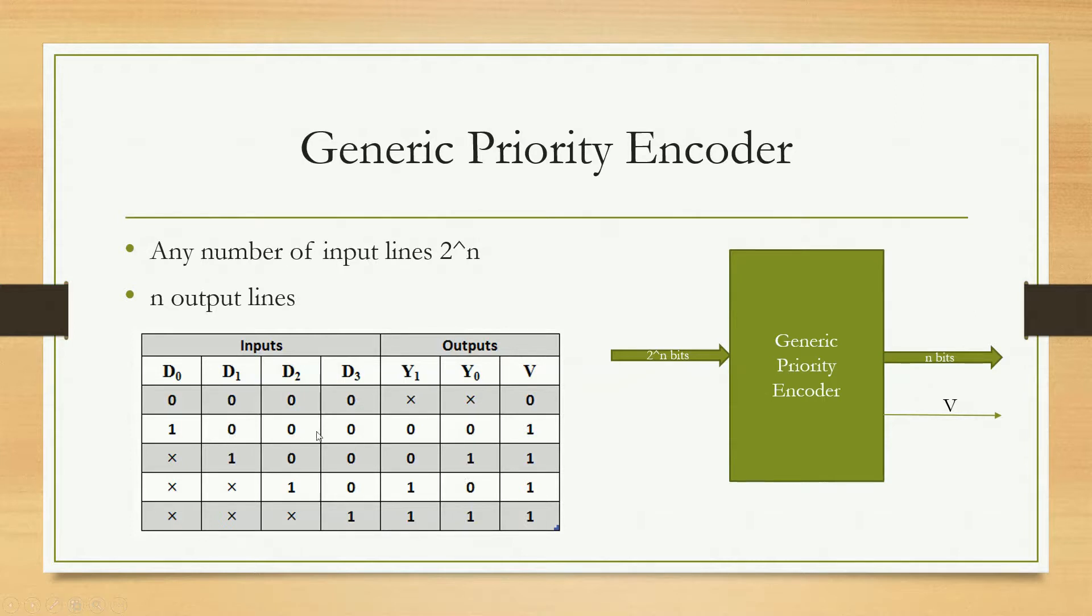If all the three are 0, D1 to D3, and D0 is 1, then at the output we will report 0 0 with valid bit high. Now if there is no input bit has a logic high value, here it can be anything but valid will be 0. In a design usually we put Y1 and Y0 as 0 0, but valid will be 0 in this case.